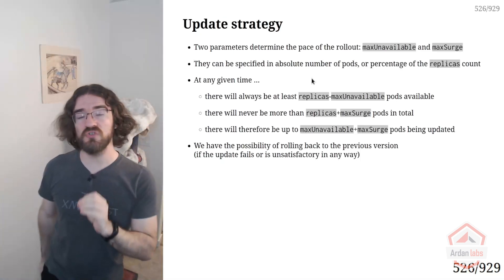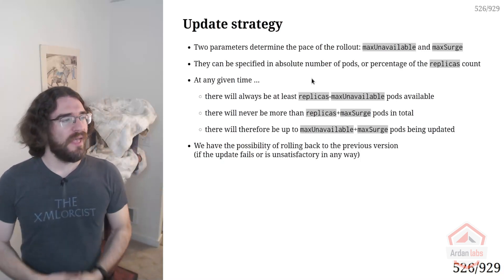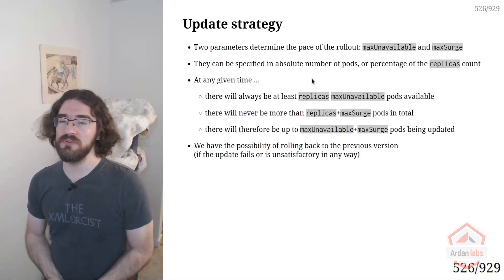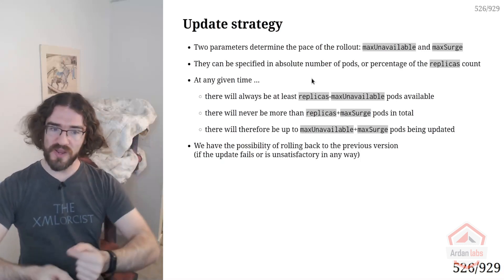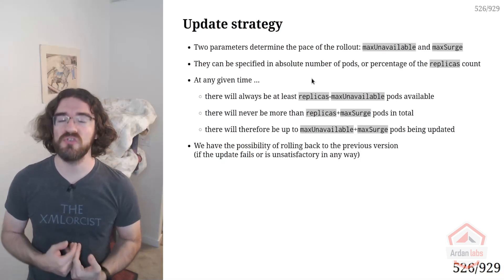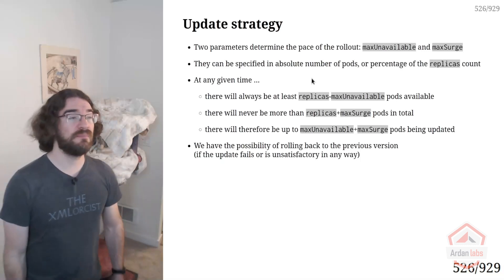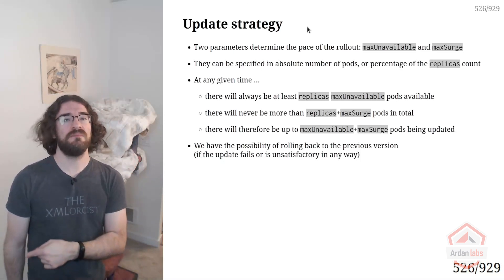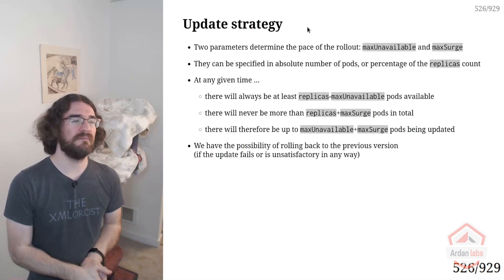If you don't want to lose any capacity during the rolling update, you can set max unavailable to zero. If you want your rolling update to be really fast, you could set max surge to 100%. That means when you start the rolling update it will create all the new pods immediately, so the update will be really fast — but it's going to use a lot of extra resources. If it's a deployment with like three pods you don't care, but for a deployment with thousands of pods, things are not going to go well.